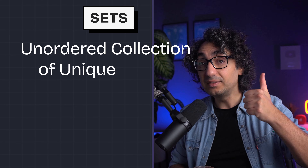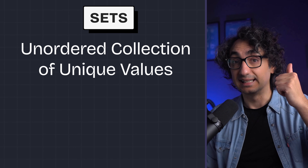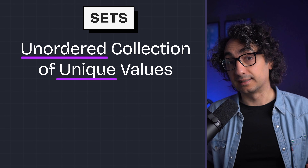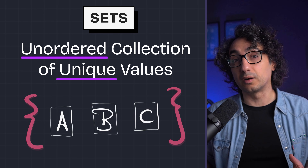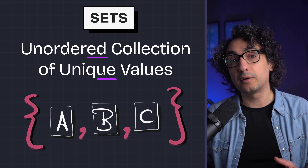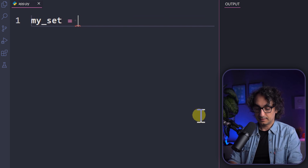A set is an unordered collection of unique items — it is unordered and unique. To create a set, the syntax is simple: use curly brackets with items separated by commas. Now let's understand the behavior of sets in Python, because every data structure has its own personality and rules.